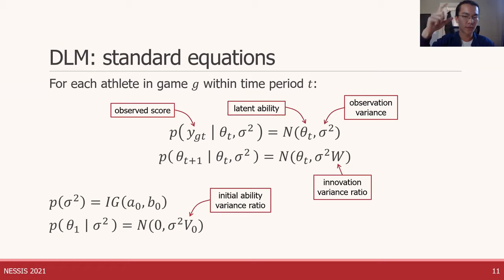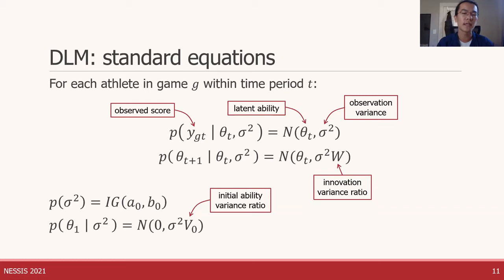In summary, the two key equations describe how scores are produced and how athletes evolve over time. If we assume these equations hold, the Kalman filter equations give us closed-form solutions for the posterior means and variances of the theta and sigma parameters. The Kalman filter is super quick to compute, which is the big reason DLMs became so popular.